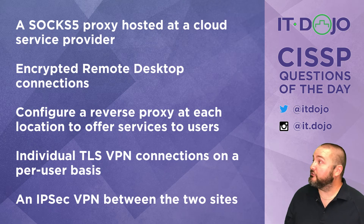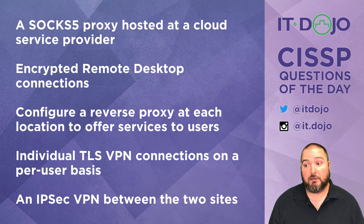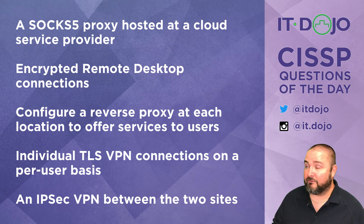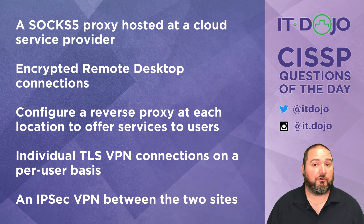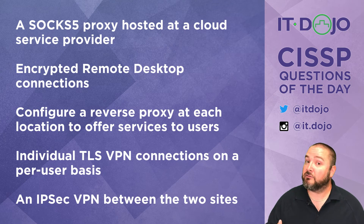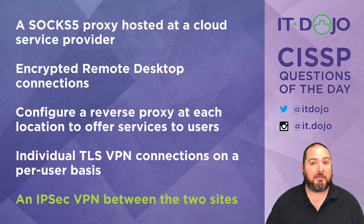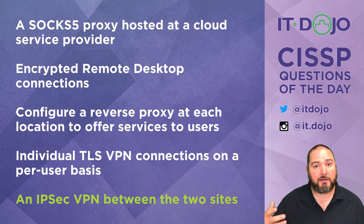Individual SSL VPN connections on a per-user basis — that sounds like a lot of user involvement. It might work, but based on the criteria in the question, it's not ideal. That puts us at the last choice: configure an IPsec VPN tunnel between the two sites. This is the best answer choice — not necessarily the only right answer, but the best one — because it best meets the criteria: connectivity to a whole host of IP-related services and minimized user involvement.